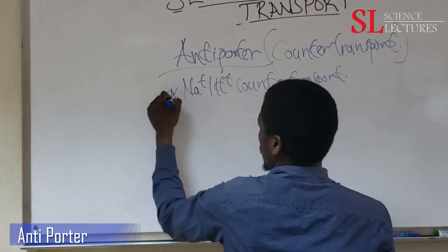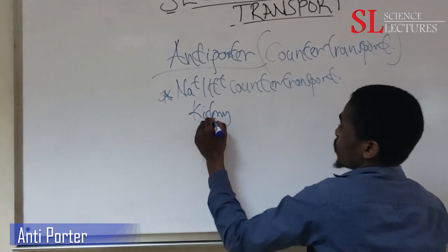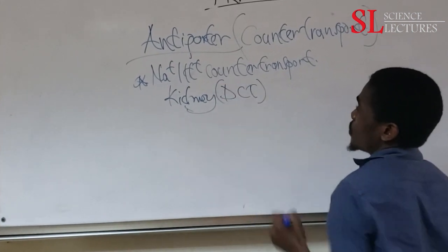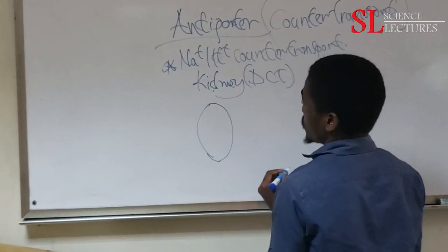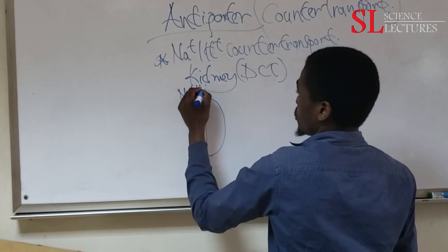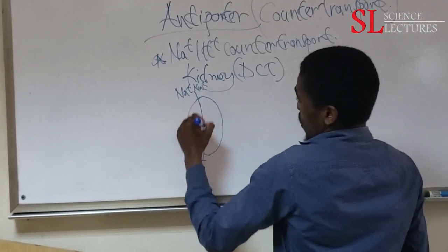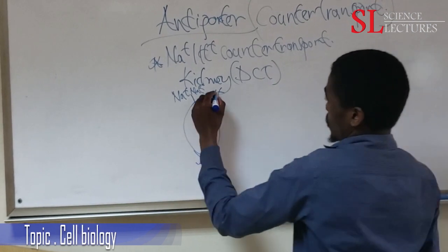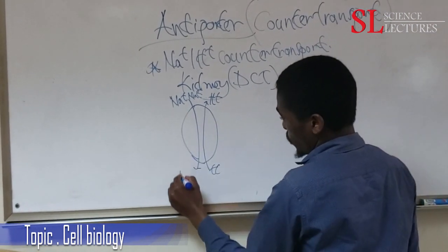The sodium-hydrogen antiporter is found in the distal convoluted tubules of the kidney. After primary active transport creates excess sodium ions, sodium ions enter the cell while hydrogen ions are transported in the opposite direction — exiting into the lumen of the distal convoluted tubule to be excreted.